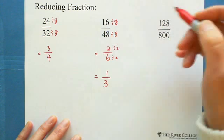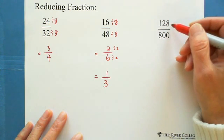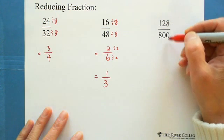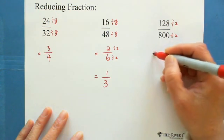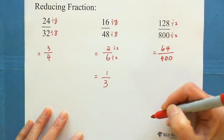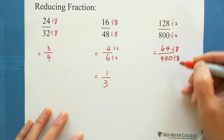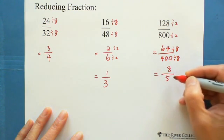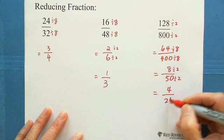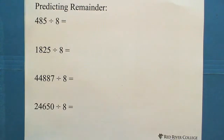For 128 over 800: 800 is divisible by 8, and 128 is divisible by 8. If you're not sure about 128, use the alternate method: 128 divided by 2 is 64, and the denominator 800 divided by 2 is 400. Then check: 64 is divisible by 4 because 8 times 8 equals 64. So divide both by 4: 64 divided by 4 is 8 on top, and 400 divided by 4 is 100, giving 8 over 100. Both are still even, so reduce further to get 4 over 25.